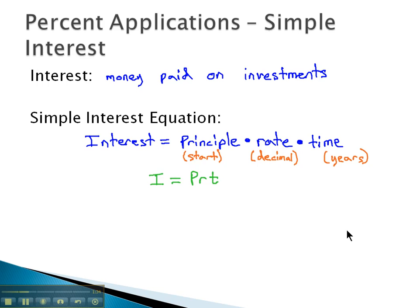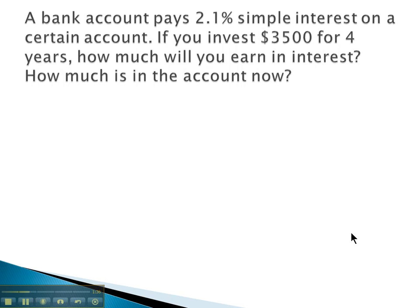So for example, if we were looking at a problem such as a bank account that pays 2.1% simple interest, and you invest $3,500 for 4 years, we want to know how much will you earn and how much is in the account. Well, our equation, interest is equal to the principal times the rate times the time.